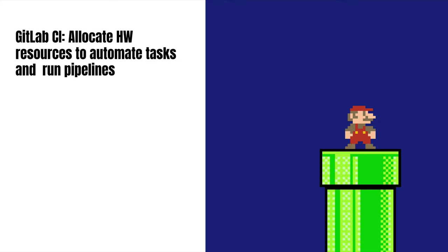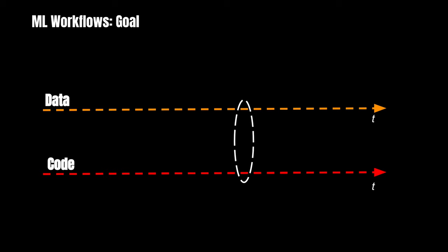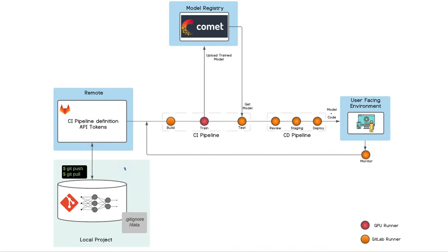How can we quickly allocate specialized hardware to automate training and run machine learning pipelines? A possible solution for those challenges resides in adopting a DevOps platform to help us keep track and bridge the lifecycle of data and code. These two usually follow and grow in different paths. I want to show you today how we can reduce the distance between these two, enabling teams to experiment and have visibility into the code associated with certain versions of the model and training data.